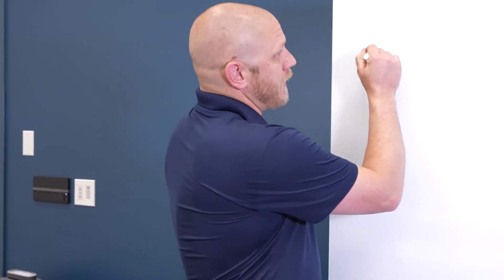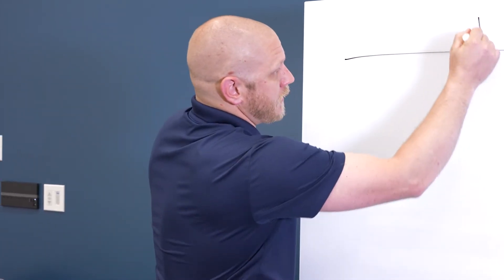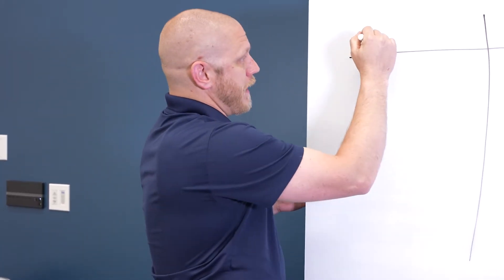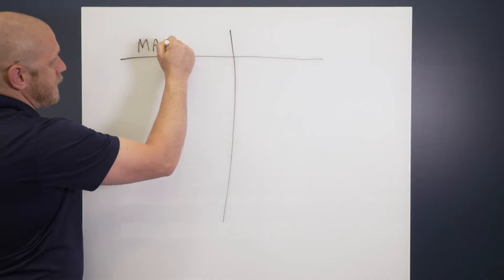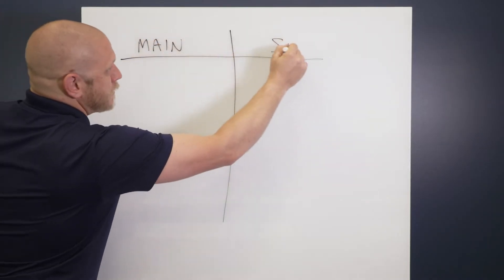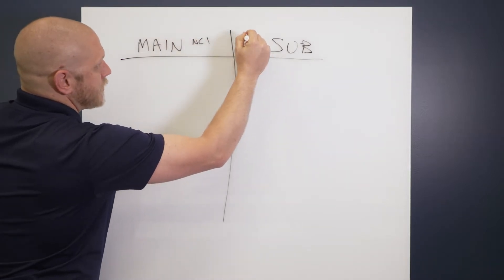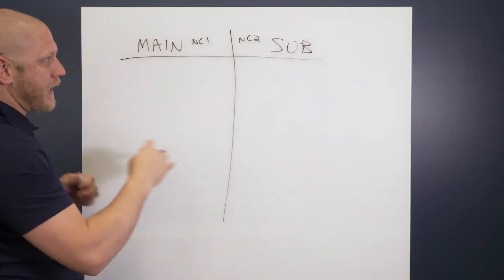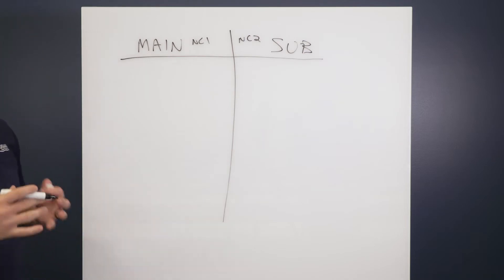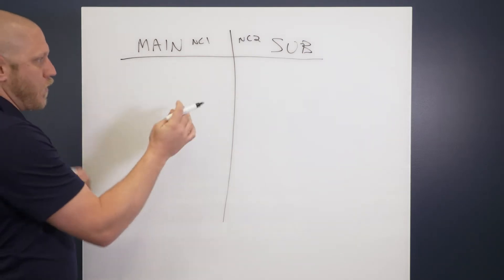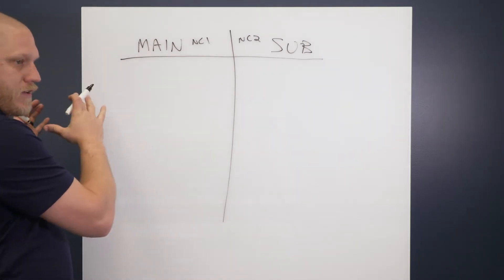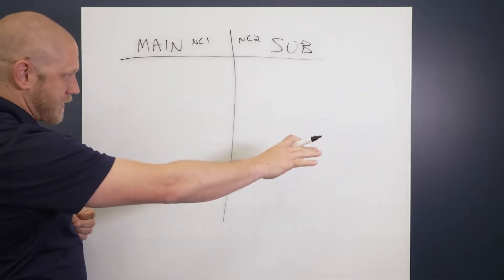For example, if I have my main path, we'll call it main. Some people call it main and sub. Some people call it NC1 and NC2. Some call it main and back. Whatever the nomenclature is, it's all the same. One is going to handle a certain number of axes and one is going to handle another certain number of axes.